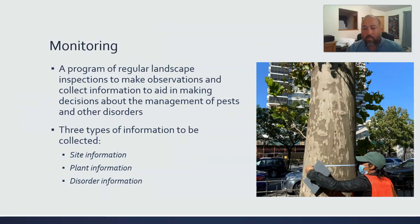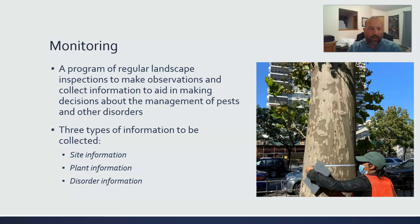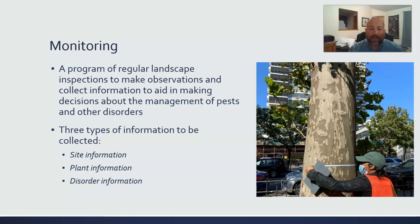Monitoring is critical throughout this whole process so that issues don't randomly pop up. For example, if you know you have ash trees, you need to monitor for emerald ash borer since it only attacks ash trees — if you don't have ash trees, don't worry about it. Monitoring means a program of regular landscape inspections to collect information and aid in decisions about the management of pests and other disorders. The information you're looking for falls into three categories: site information, plant information, and disorder information.